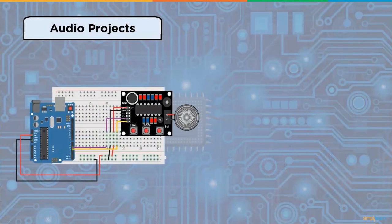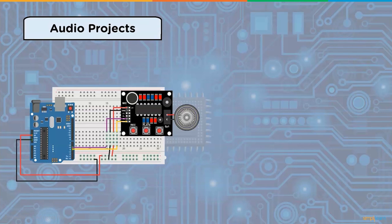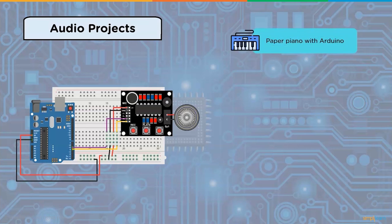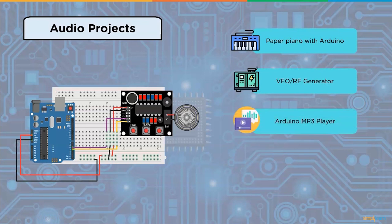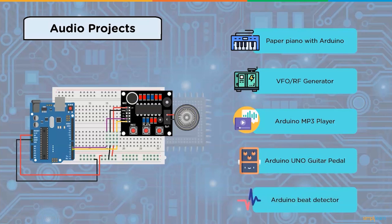Audio projects using Arduino: Arduino is a programmable logical controller that can do a variety of cool things depending on your programming skills. Using Arduino to make music is a special genre of projects. Some Arduino audio projects are paper piano, VFO or RF generator, Arduino MP3 player, Arduino Uno guitar pedal, Arduino beat detector, mini vintage internet radio, and morse code communication.